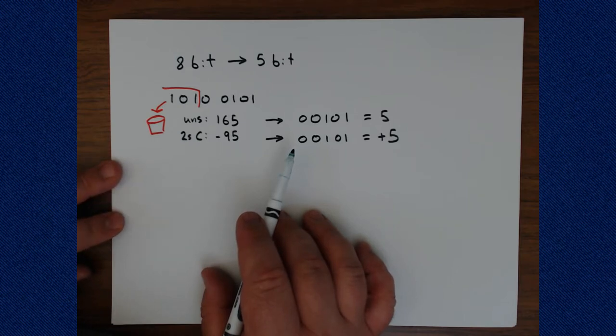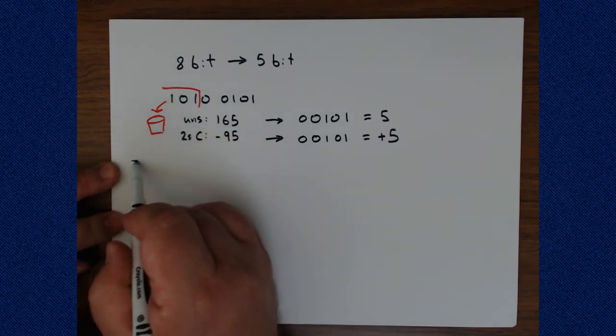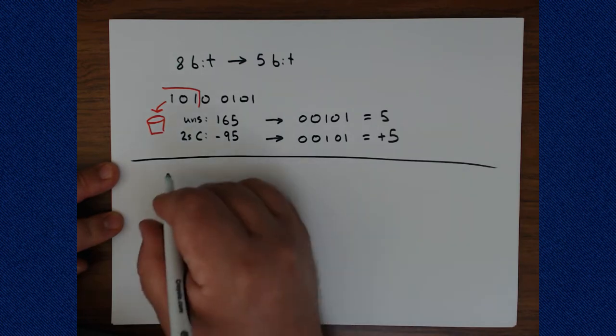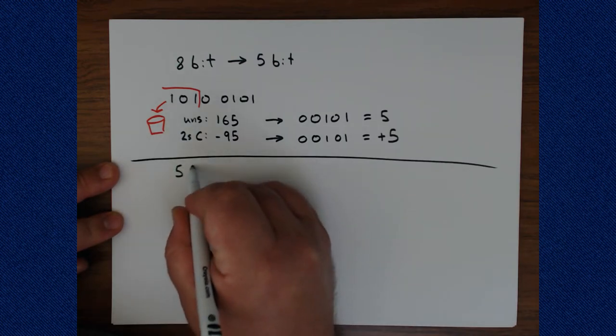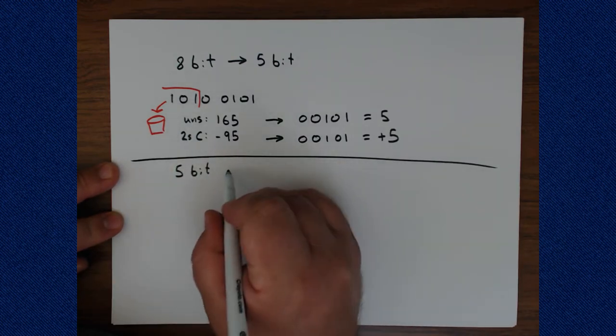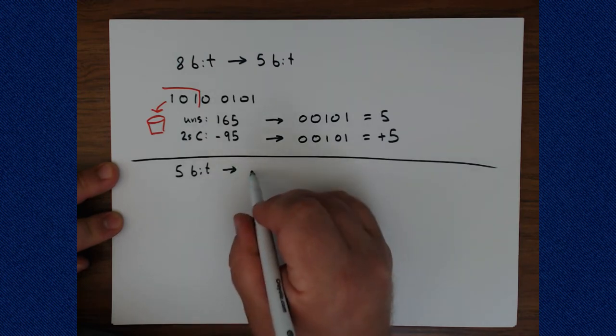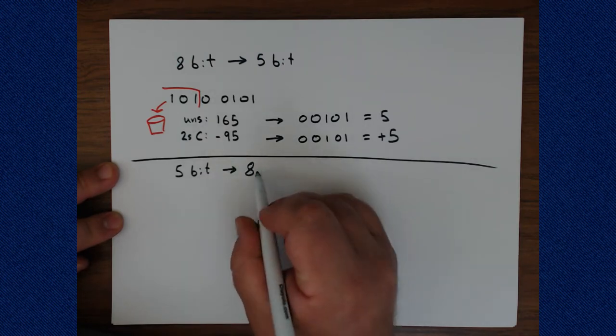Now let's look at this again, the same basic phenomena. But instead of going from eight bits to five bits, let's go from five bits to eight bits. So what does it mean to go large? Five bits to eight bits.